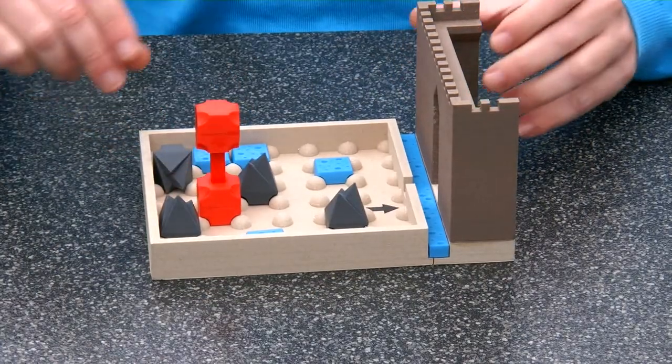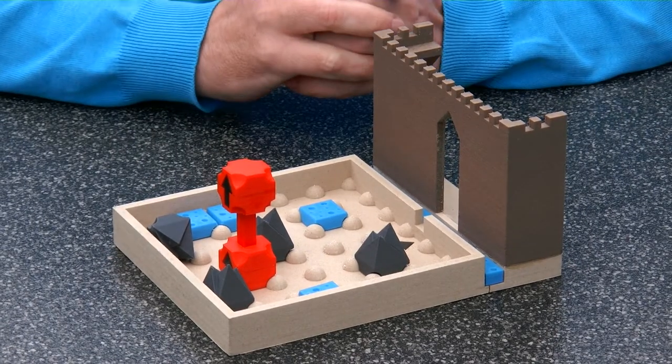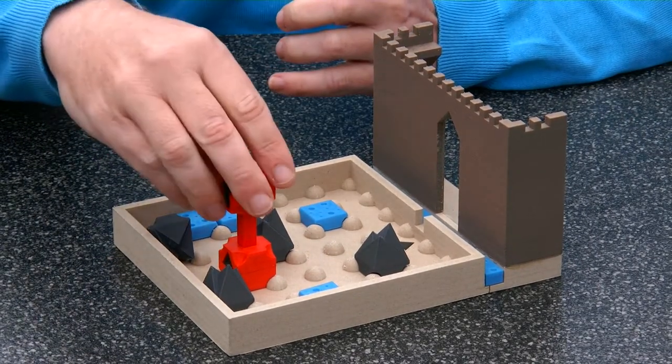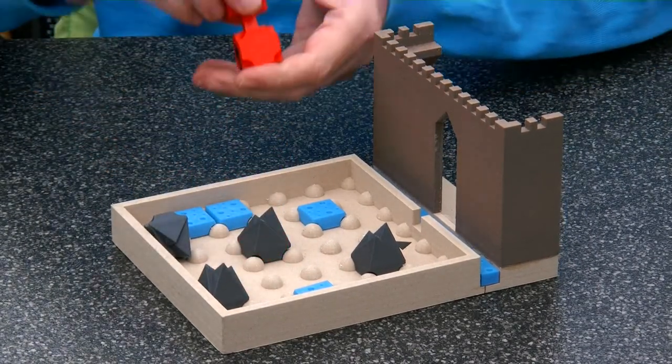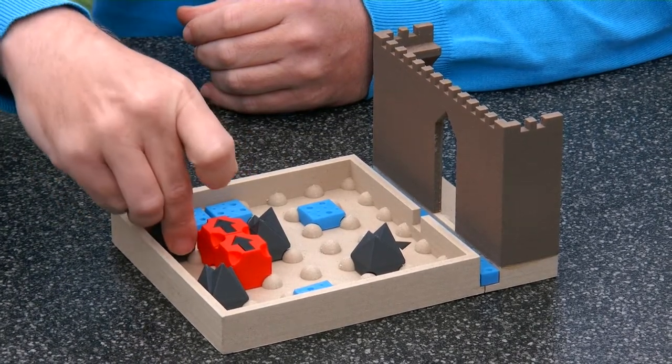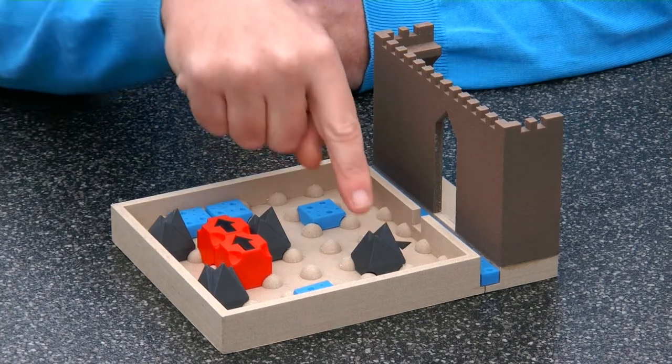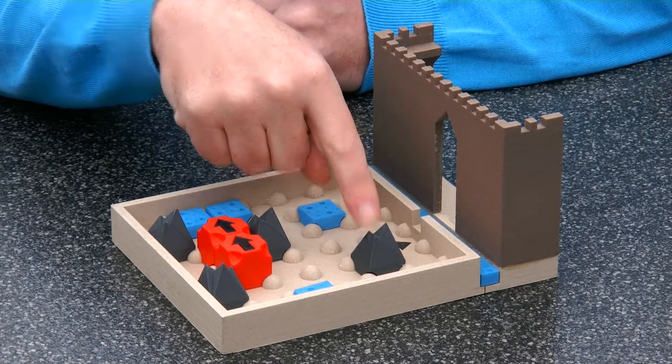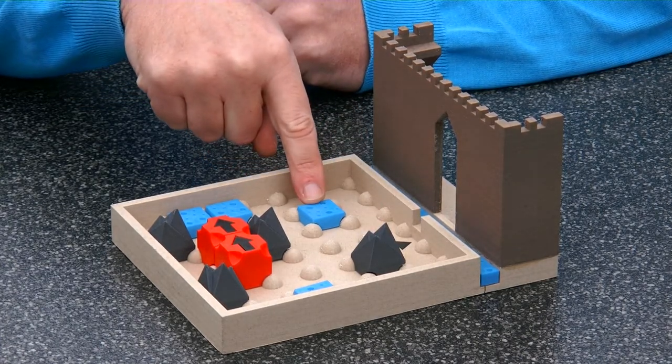So the way that this puzzle works is that you have to roll the rolling piece. We also have obstacles. This is a mountain obstacle and this is a swamp obstacle.